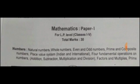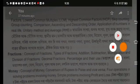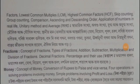These questions cover the following information from the survey. The first question is to reach the original database. Topics include: numbers, composite numbers, place value system — Indian and international — four fundamental operations on numbers: addition, subtraction, multiplication, and division. Also covered are factors and multiples, prime numbers, prime factors, and lowest common multiples.